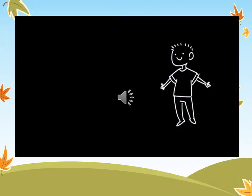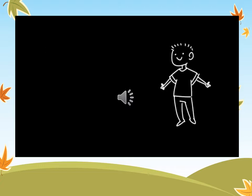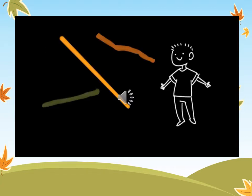Say hello to Jamal. I asked him to help out with our project. Our project is to compare the lengths of three objects, then tell which stick is the shortest and which is the longest. I asked Jamal to find three sticks for us to compare. Here they are. It's hard to compare their lengths when they're all twisted up like that.